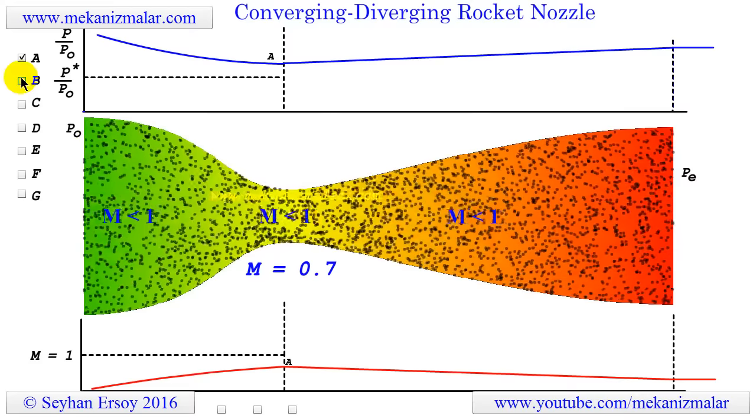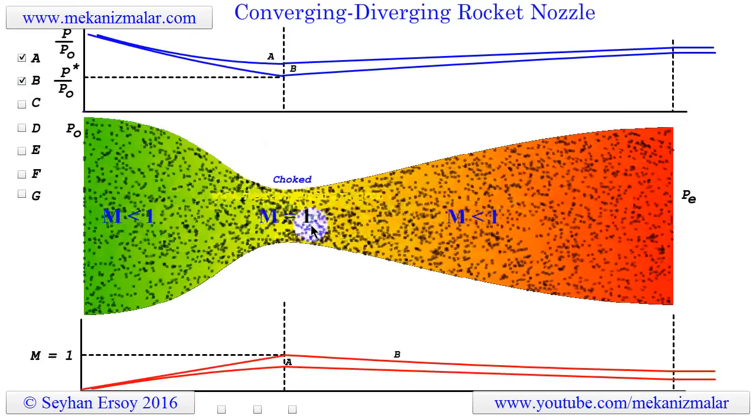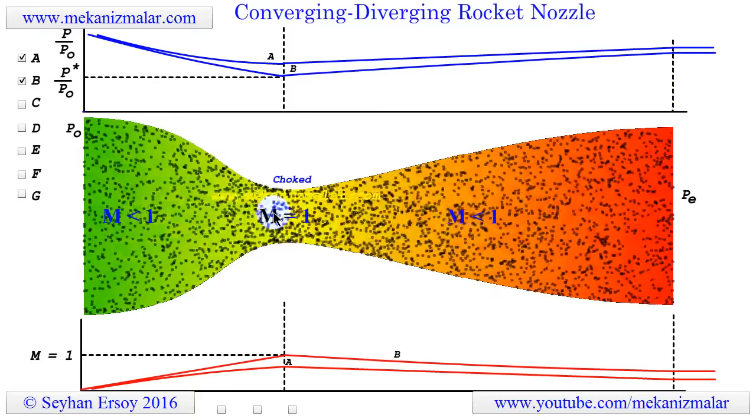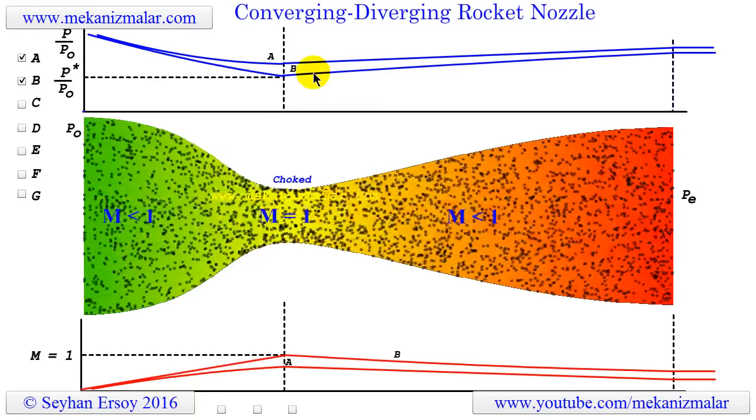For case B, we will reduce the exit pressure further so that the flow speed reaches Mach 1 at the throat of the nozzle. This is a crucial point of converging-diverging flow behavior, and things begin to change from this point.